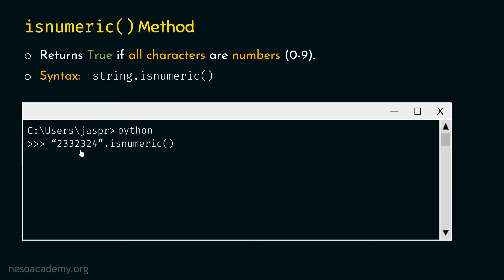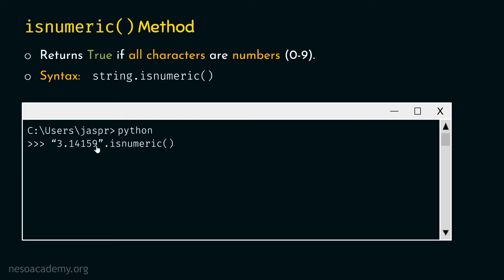If we hit enter on '2332324'.isnumeric(), we will get true as a result, because all characters in this string are numbers. Let's try another example: '3.14159'.isnumeric(). If we hit enter, we will get false. Even though 3.14159 looks like a number, the decimal point inside the string is not a number — it is a full stop character. So isnumeric returns false.